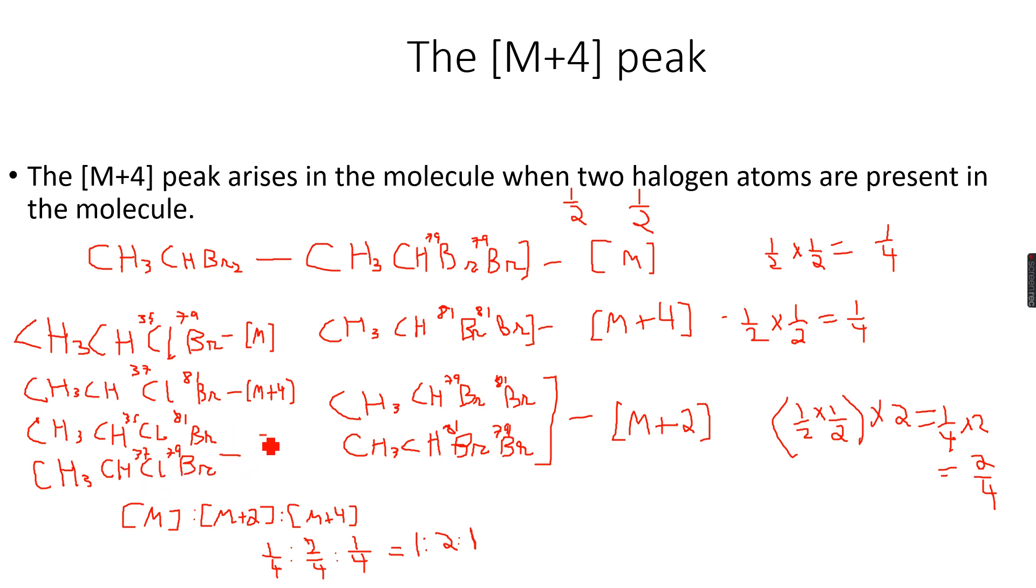And both of these will contribute to my M+2 peak. And similarly you can calculate the ratios of the M is to M+2 is to M+4 peaks by using probabilities, multiplying the probability of this by the probability of this and doing something similar for the other ones as well. And now we'll move on to the next slide.